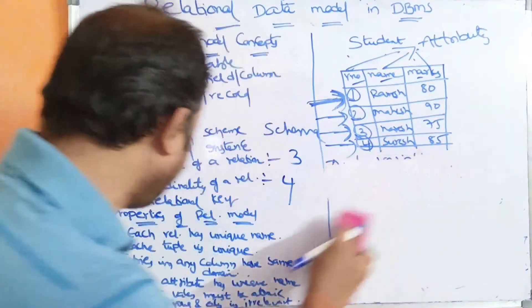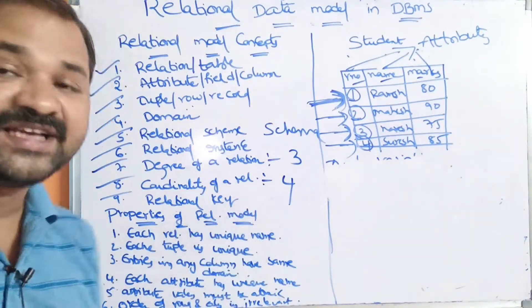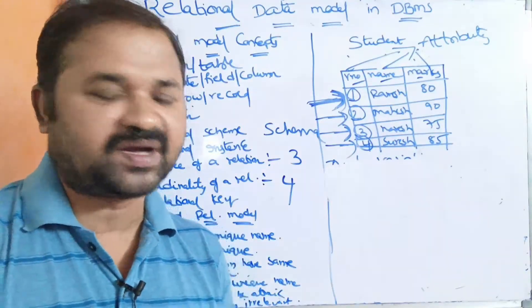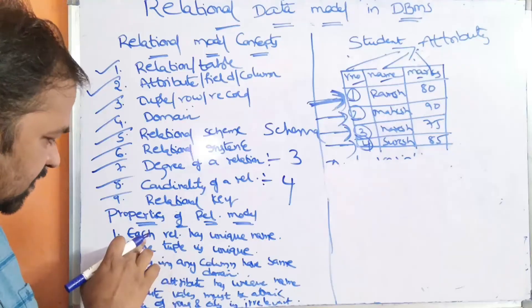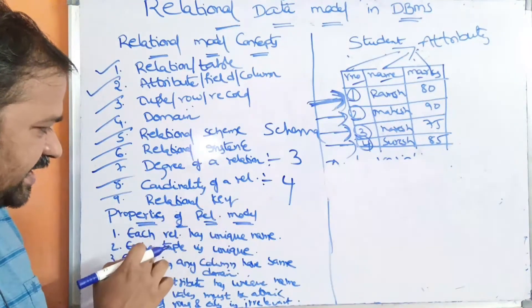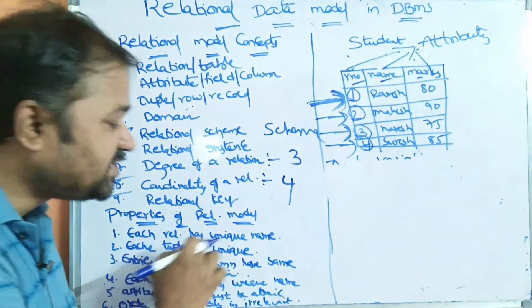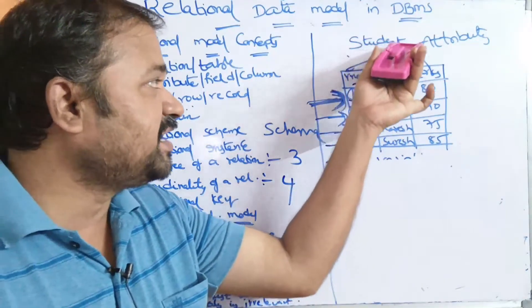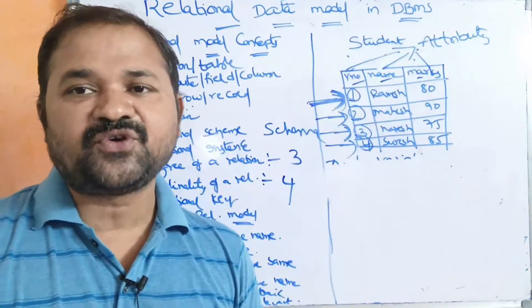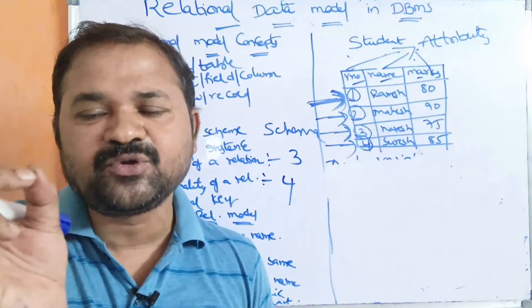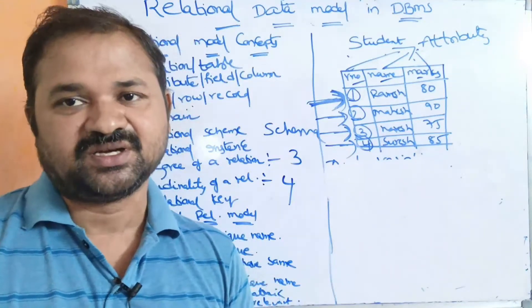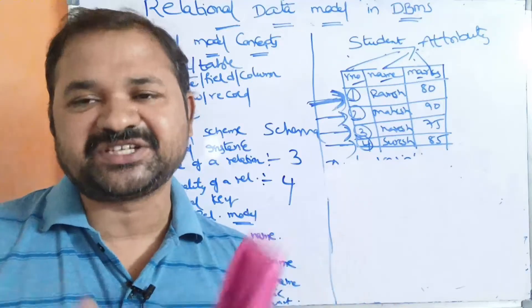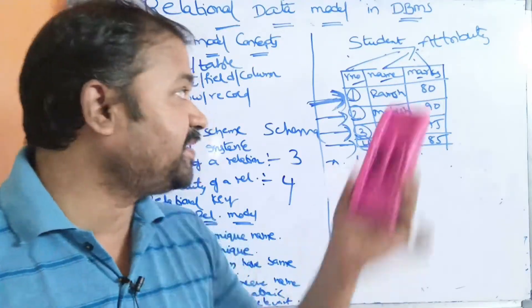Now let us see the properties of the relational model. Here we have six properties. The first property of the relational model is: each relation has a unique name. So we cannot give the same name to multiple relations — relation names must be unique, and duplicate names are not allowed.